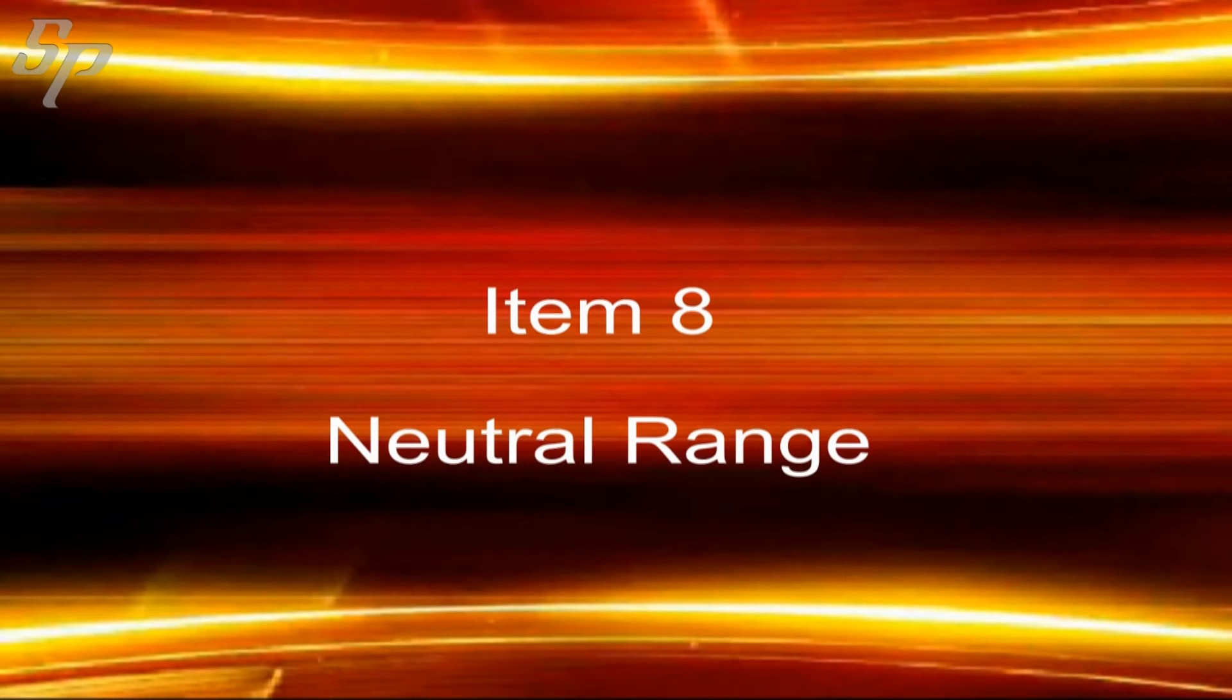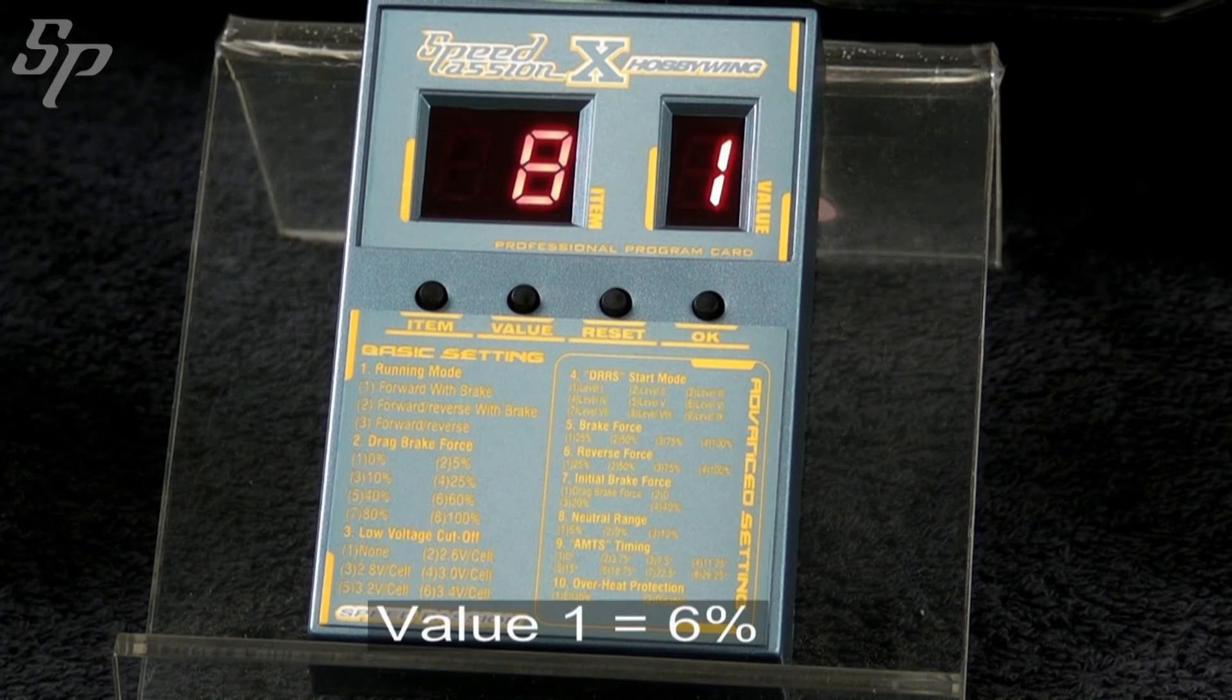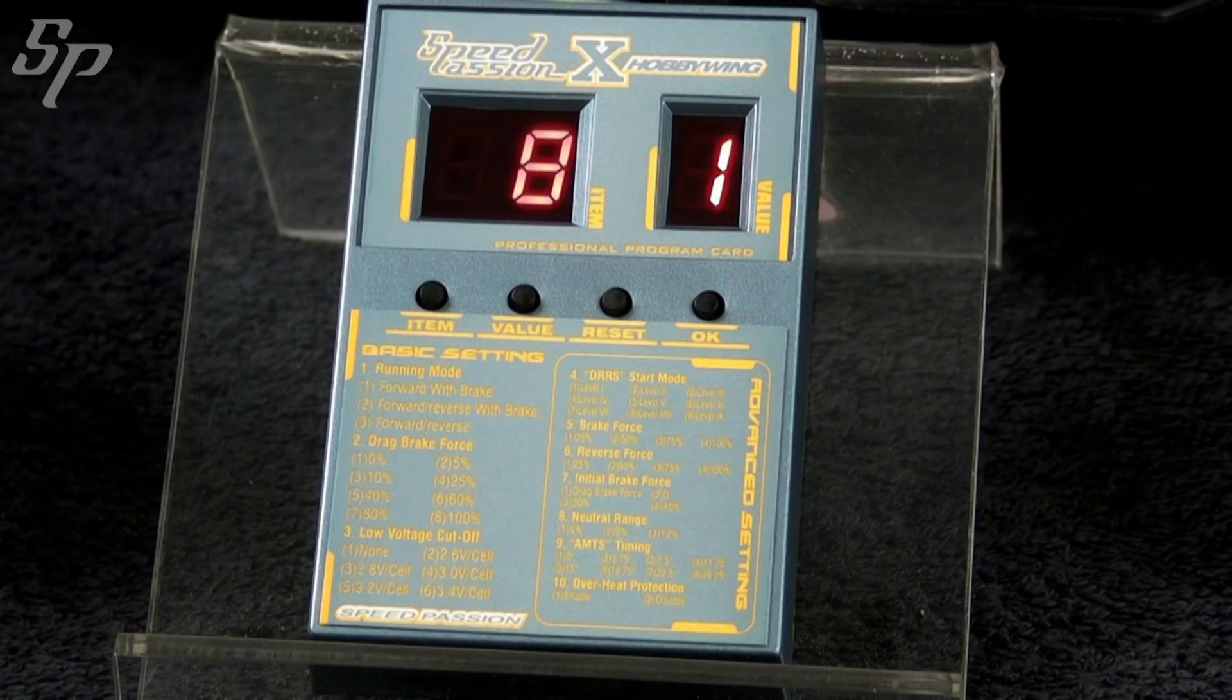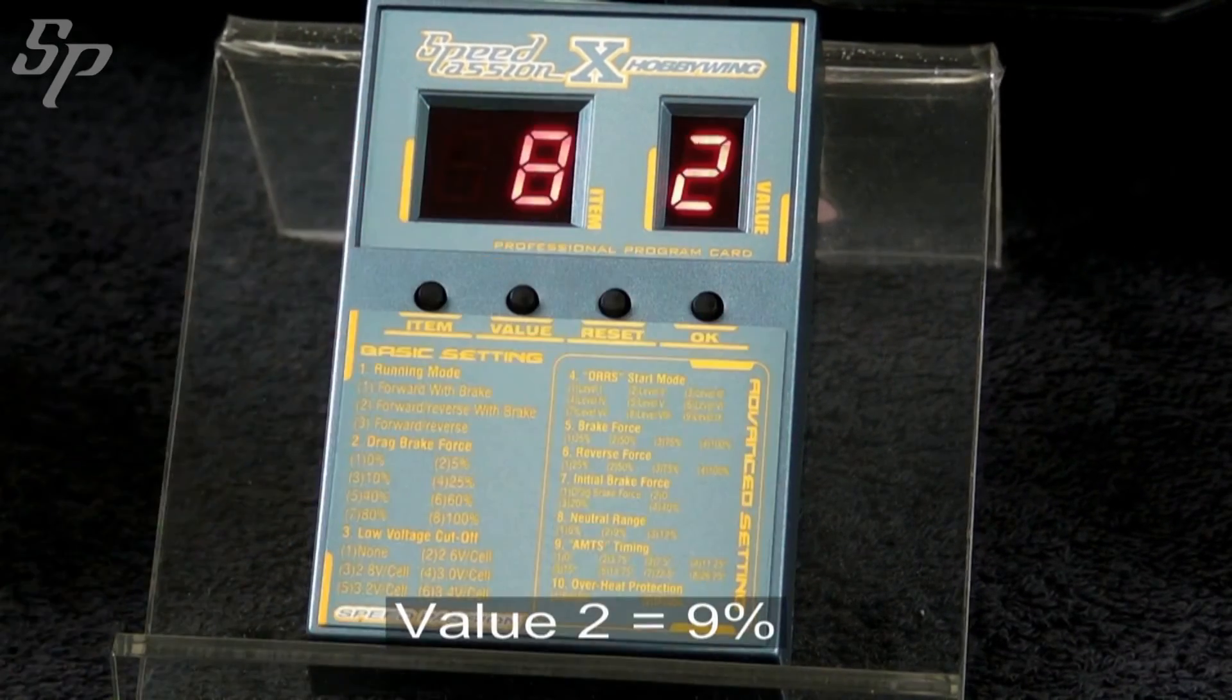Item 8 is neutral range. A value of 1 gives the fastest response. Other values will give slower responses.